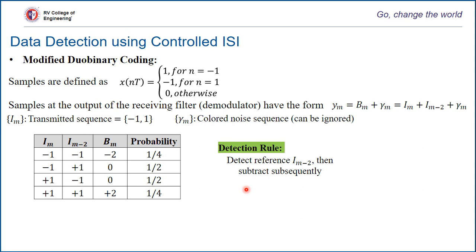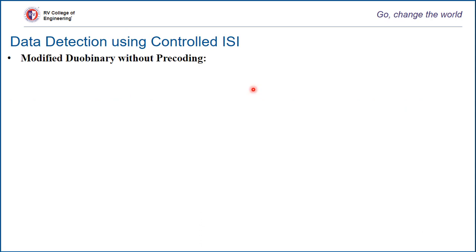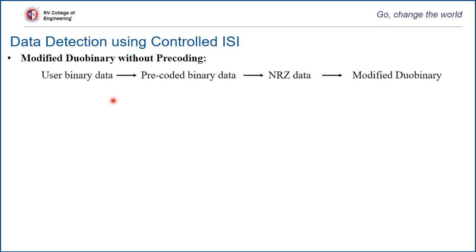This is transmitted and detected at the receiver with a simple detection rule, where we keep reference as im minus 2 — earlier the reference was im minus 1. We try to subtract subsequently. The same problem as simple duobinary coding arises with respect to error propagation. To eliminate this error propagation, we introduce a precoder. Modified duobinary without precoder is exactly similar to duobinary without precoder.